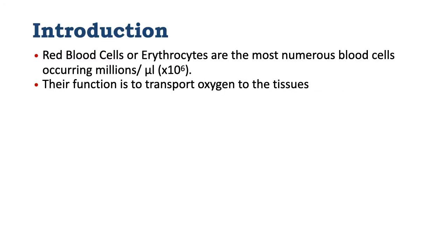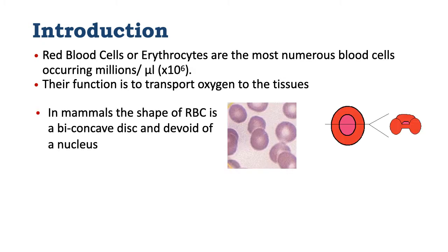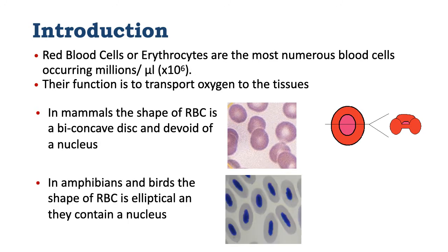Red blood cells, or erythrocytes, are the most numerous cells in the blood and they occur in millions. Their function is to transport oxygen to the tissues. In mammals, red blood cells are biconcave in shape and do not have a nucleus. In amphibians and birds, red blood cells are elliptical and they contain a nucleus.